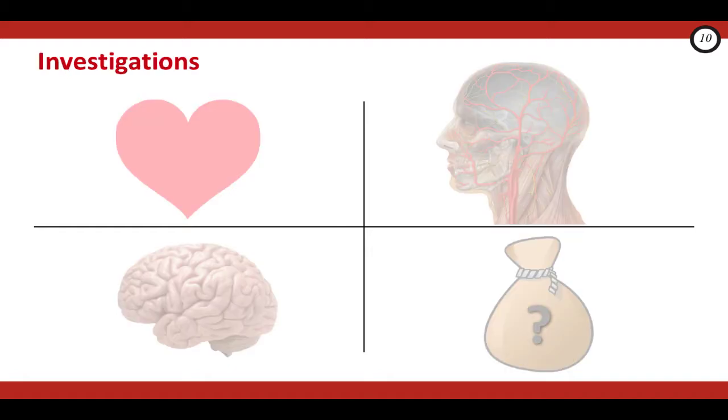So now that we've covered the four types of TIAs, let's talk about the four main investigations that need to be done in the ER. The purpose of these essential tests are two-fold. One is to rule out non-ischemic stroke entities, including things in that fourth grab bag category. And the second is to help you figure out which type of TIA your patient may have had.